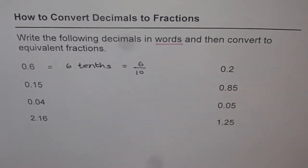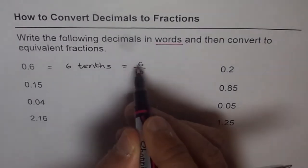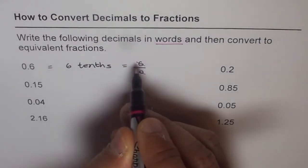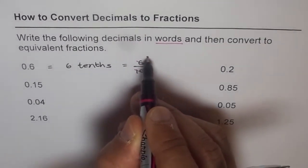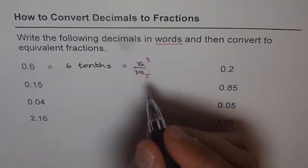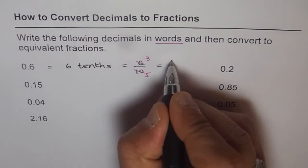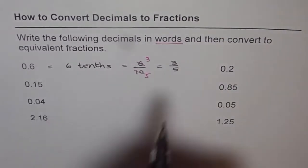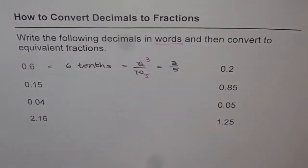Which you can write in lowest terms by dividing by the common factor, which is 2. So if you divide both by 2, 2 goes 3 times and 5 times in 6 and 10 respectively. So you get 3 over 5. So 0.6 could be written as 3 over 5.